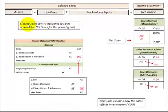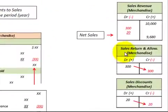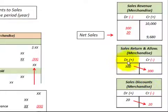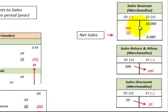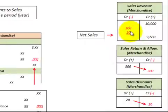At the end of the year we're going to close our sales contra accounts to the sales account and come up with net sales for the period. We have the sales returns and allowances with a debit balance of three hundred dollars, so we credit that for three hundred dollars, and the associated debit entry goes to sales revenue for three hundred dollars, which reduces sales revenue. Same thing for the sales discount — we had a debit balance of twenty dollars, so we credit that and debit the sales revenue.